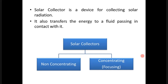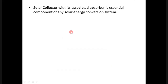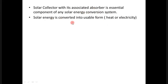Solar collectors are of two types: non-concentrating type and concentrating type. Concentrating type collectors are also known as focusing type collectors. A solar collector with its associated absorber is a very essential component in any solar energy conversion system. Solar energy is converted into a usable form — either heat or electricity.